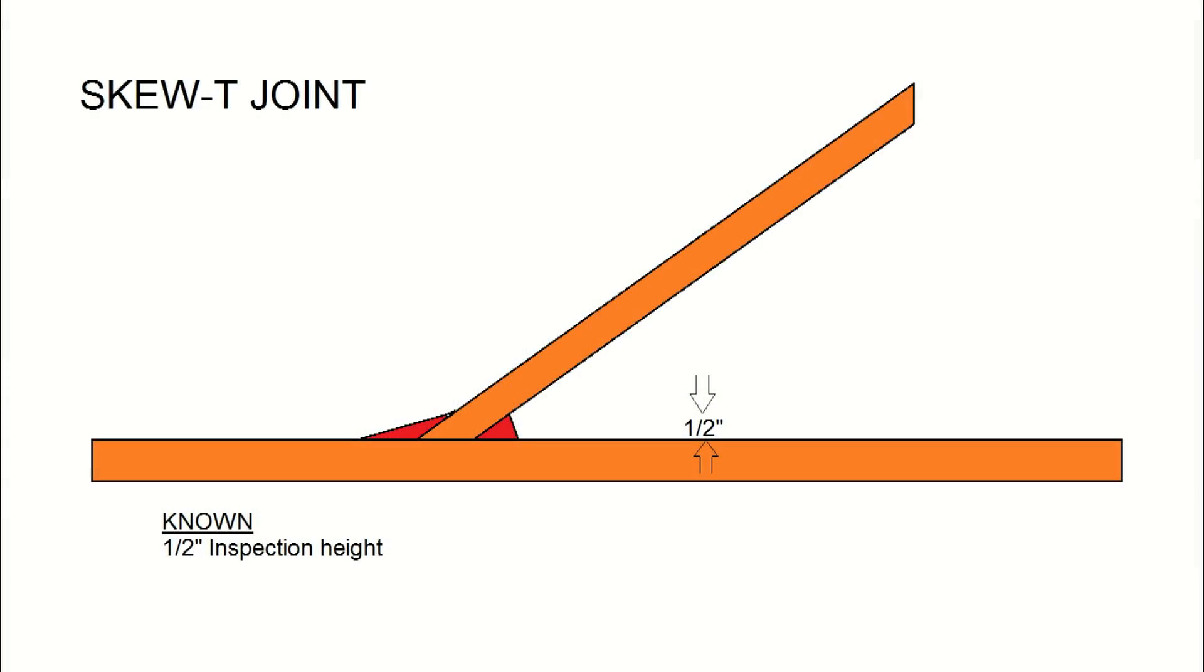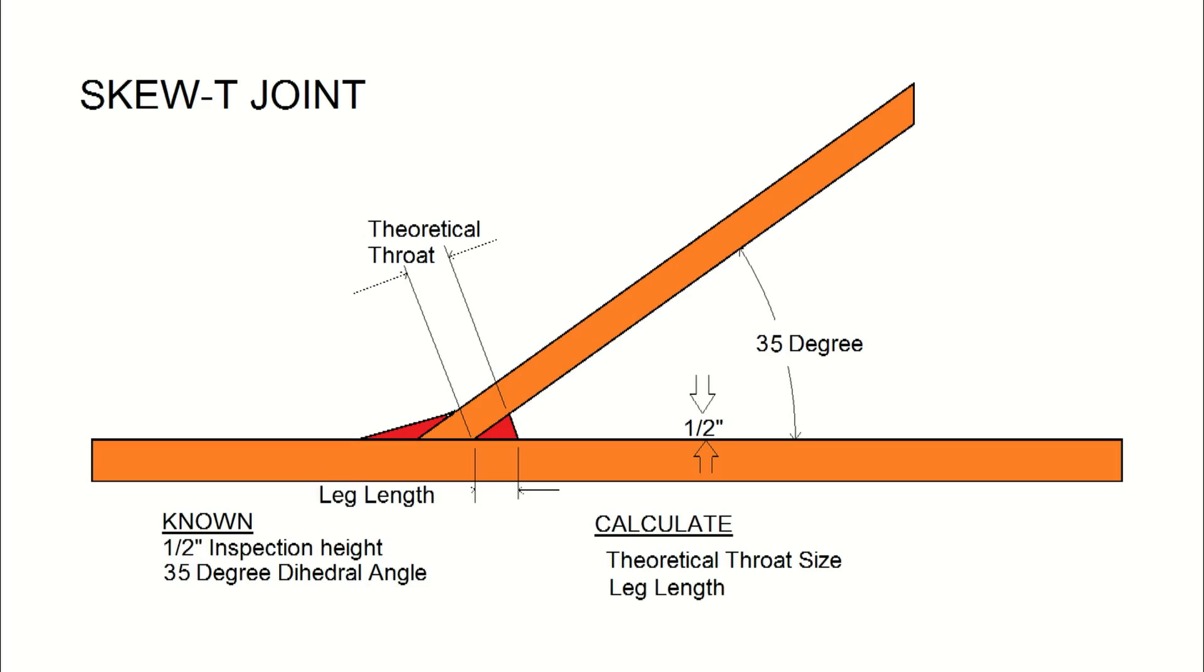With the known 1/2 inch inspection dimension and the verified dihedral angle, we can use the SKEW-T weld calculator to find the theoretical throat size and the leg size of the fillet weld.